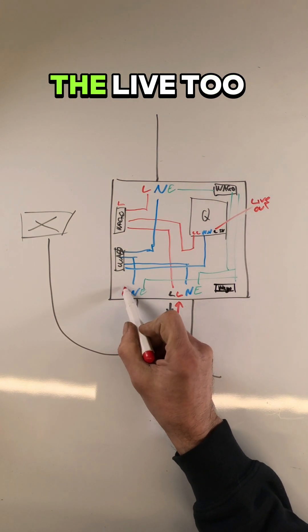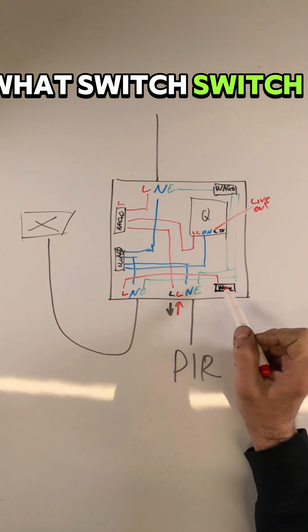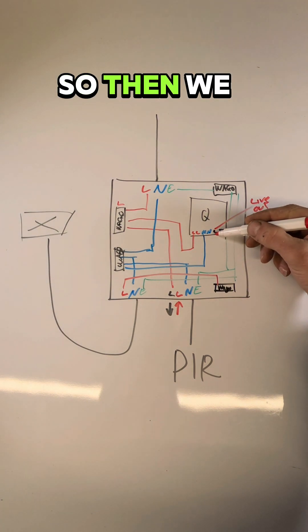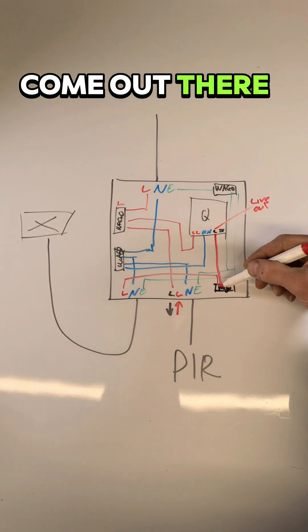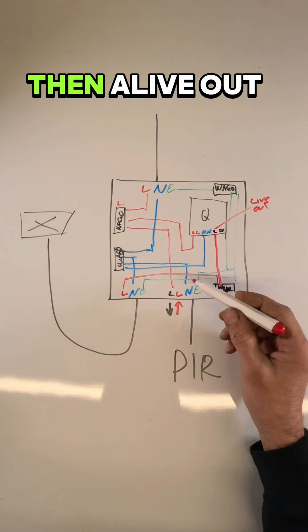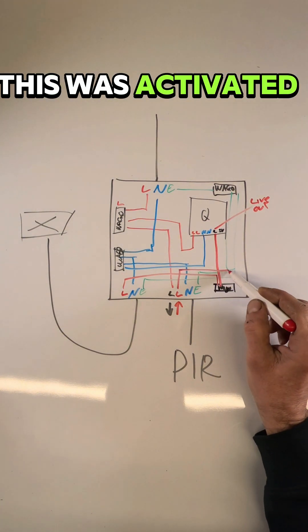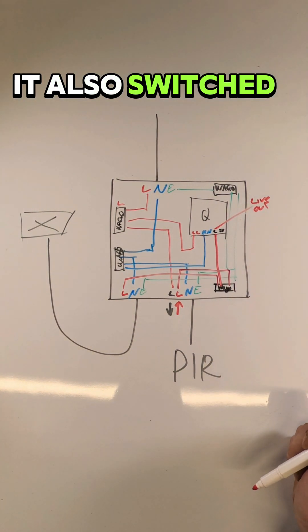We took the live too, so this was what switched the light on. So then we had the live come out of there into the switch. So when this was activated it turned the light on, and then a live out of the PIR. So then when this was activated it also switched the light on.